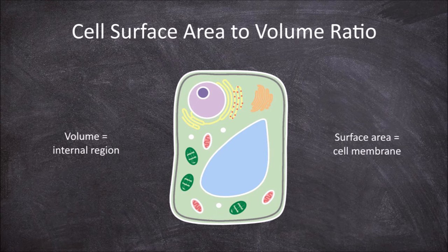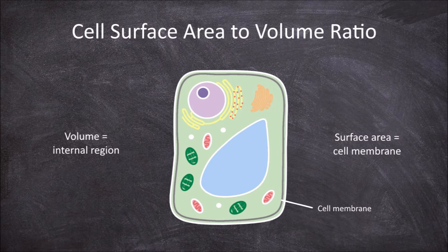The surface area of the cell is determined by the cell membrane. This cell membrane is responsible for regulating the movement of molecules into and out of the cell. Gases and other molecules have to move through the cell membrane into the cell, and waste products have to move through the cell membrane to be eliminated from the cell.